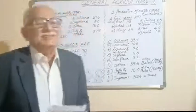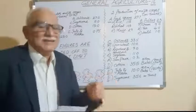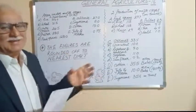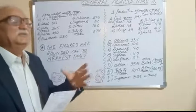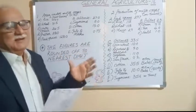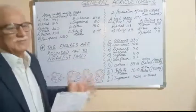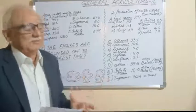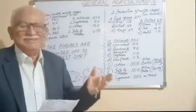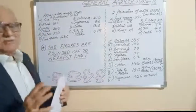Welcome dear students to our class on General Agriculture 16. In this class we are going to learn area under major crops, what are the production levels of food grains, pulses, oilseeds, and commercial crops. Please subscribe to our channel Agrometrics Farmers and share it.